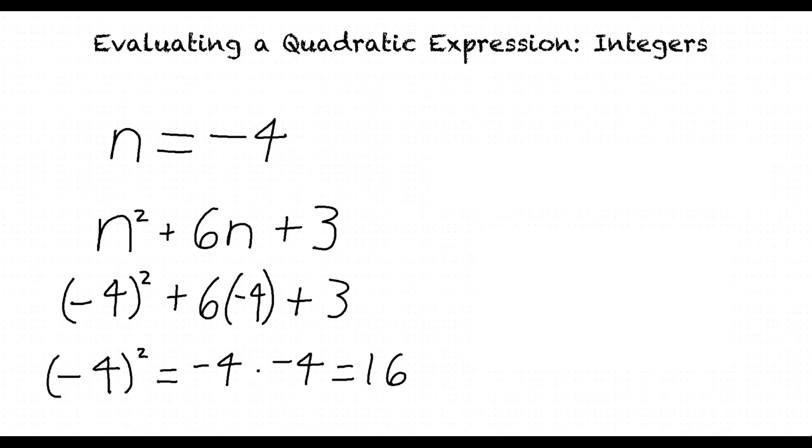This means we get 16 minus 24 plus 3, right? Exactly. This simplifies even further to negative 5.